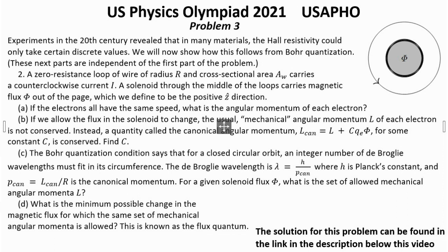Experiments in the 20th century revealed that in many materials the Hall resistivity could only take certain discrete values. We will now show how this follows from Bohr quantization. These next parts are independent of the first part of the problem.